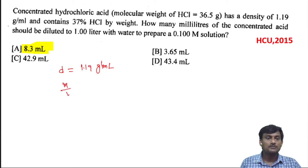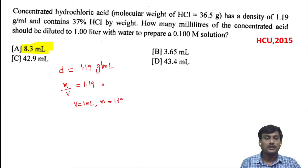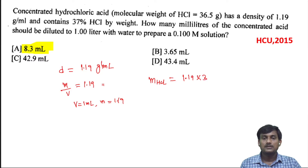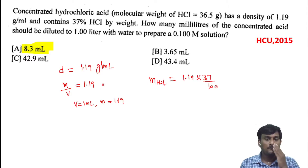Density is M/V equal to 1.19 gram per ml. Taking volume as 1 ml, mass will be 1.19 grams. The percentage of HCl is 37% by weight, so the actual weight of HCl will be 37% of this mass: 1.19 gram/ml × 37/100. We know the molecular weight of HCl, so we can calculate the molarity of HCl before dilution.